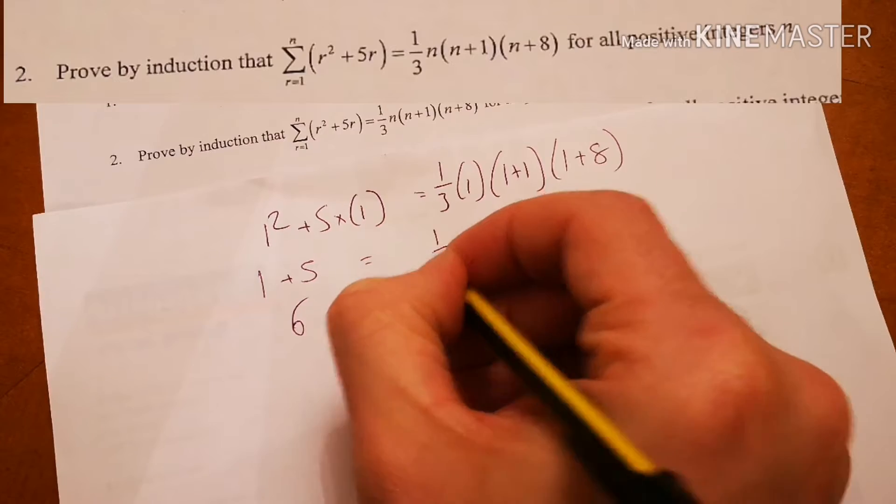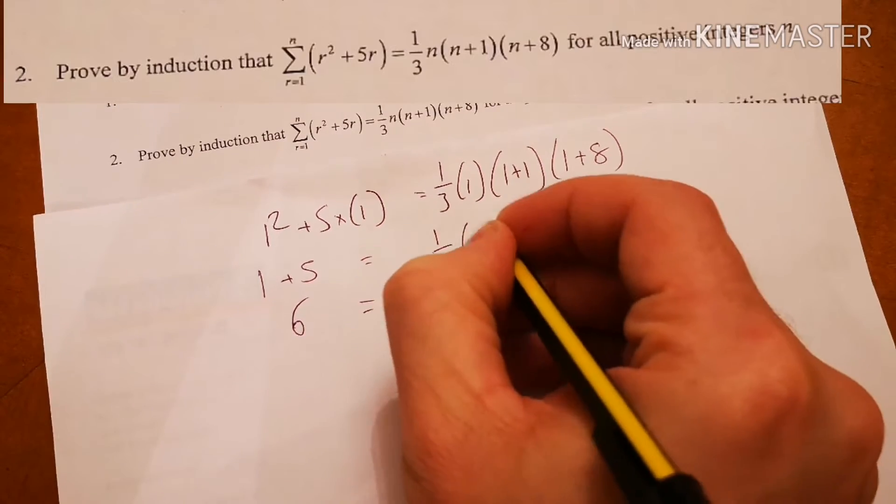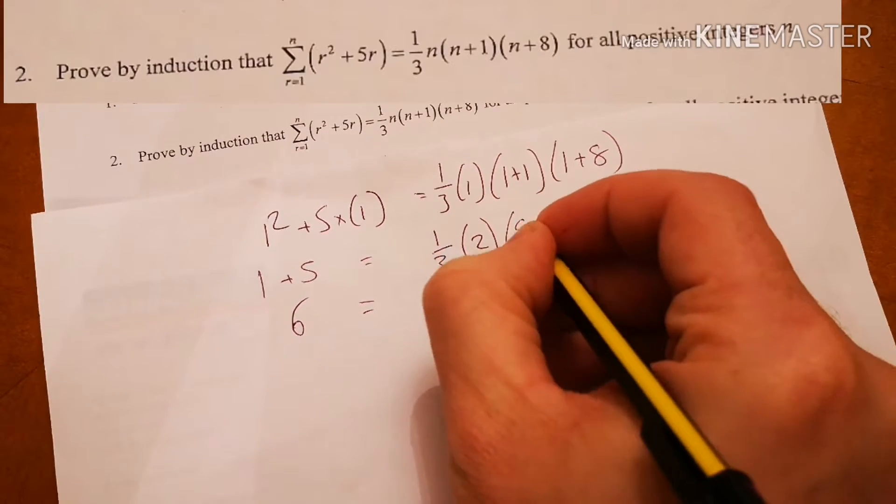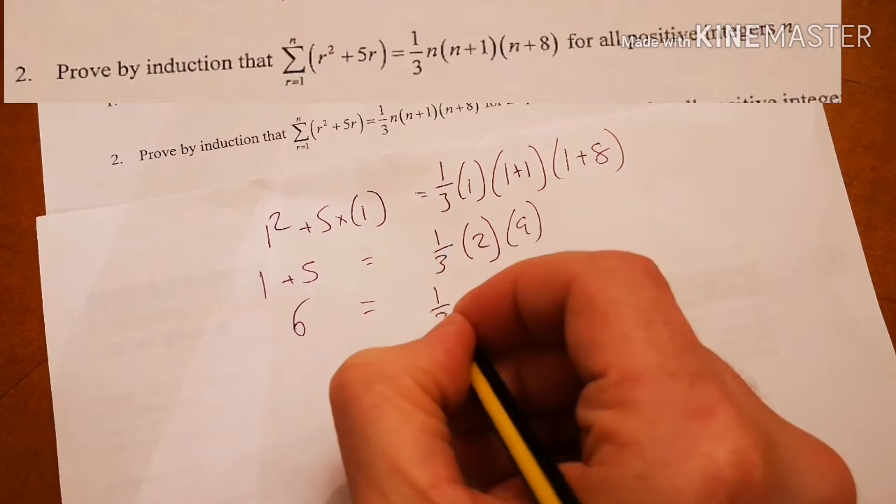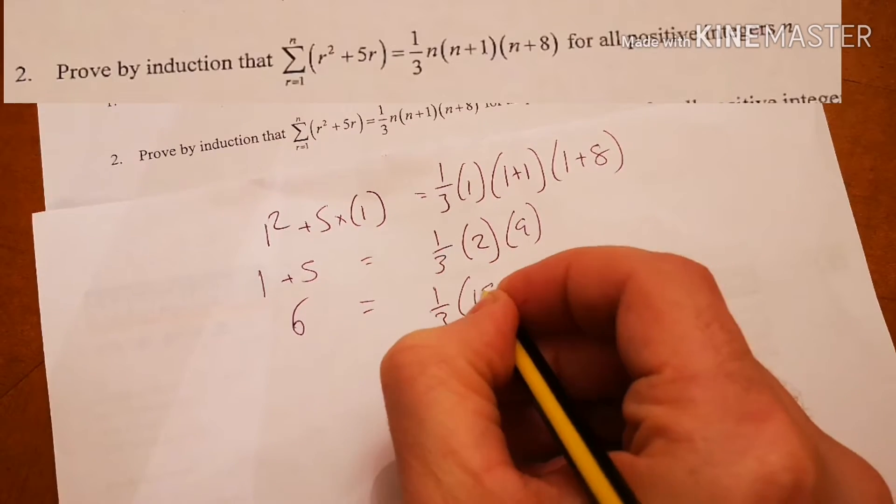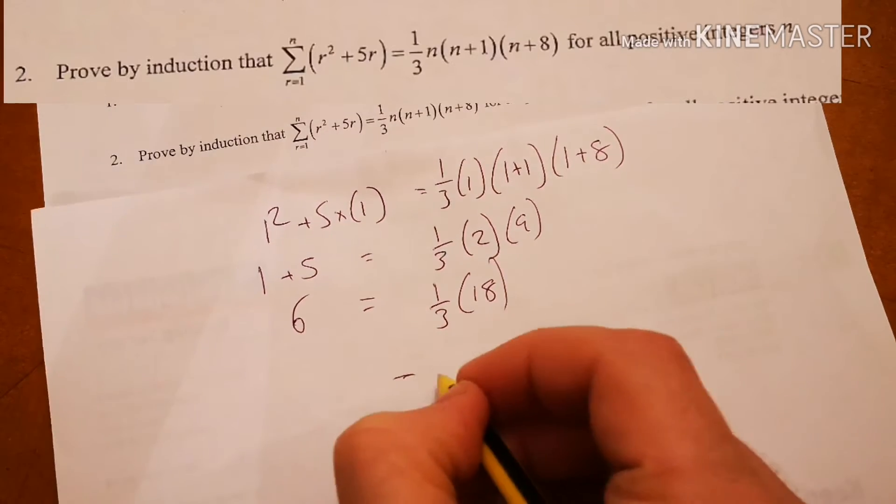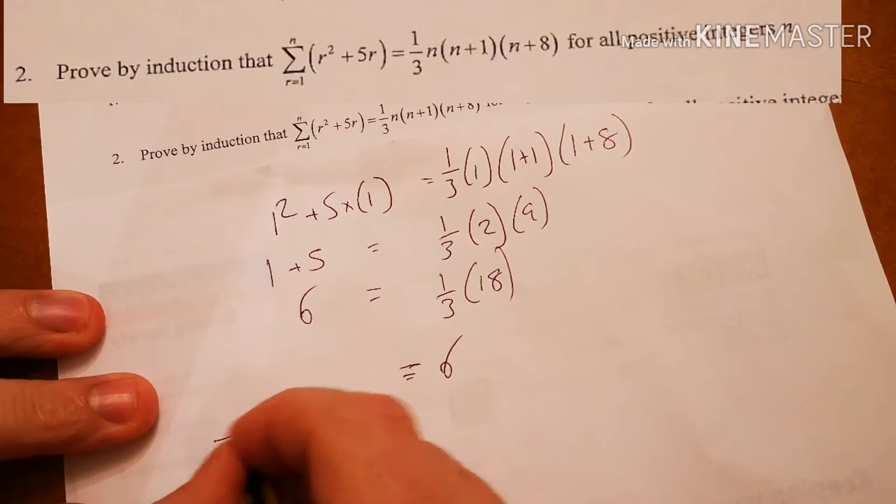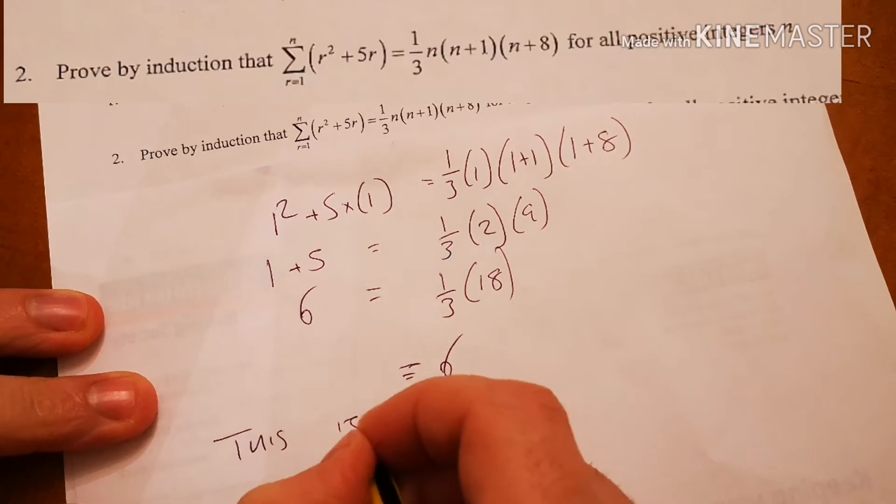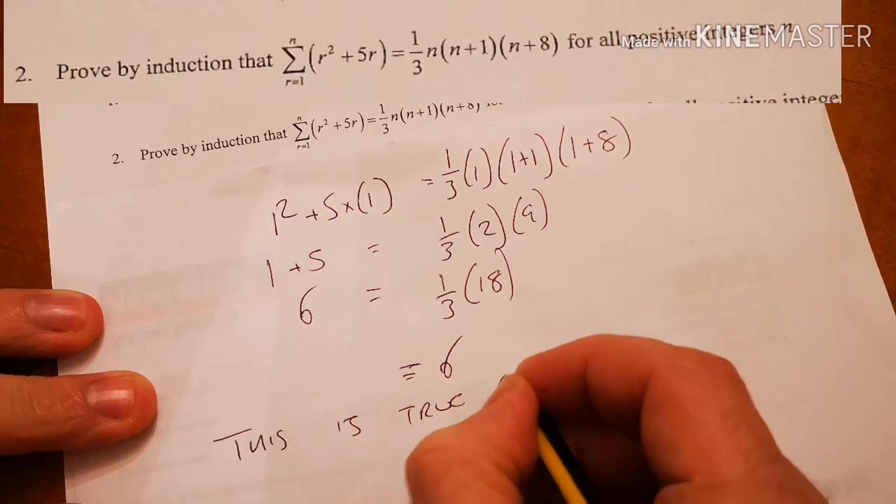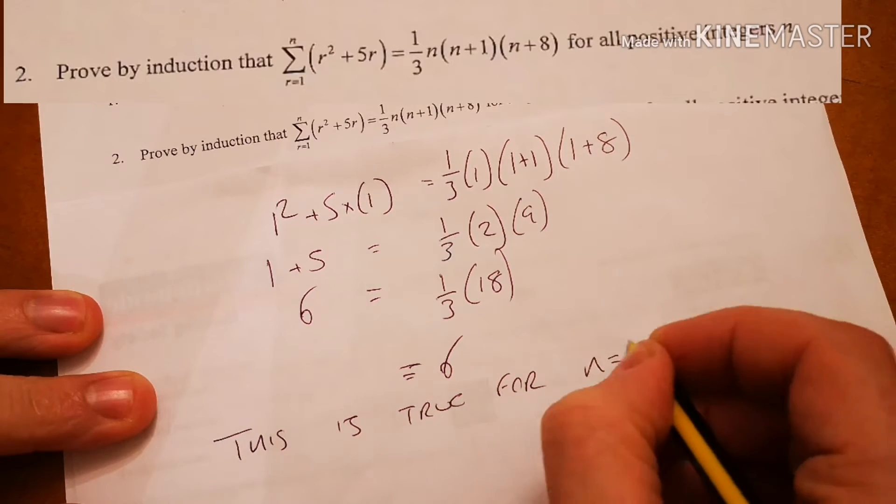So I've got a third, this one can disappear, times by 2 times by 9. So I've got a third times by 18, which is 6. So I want to say this is true for n equals 1.